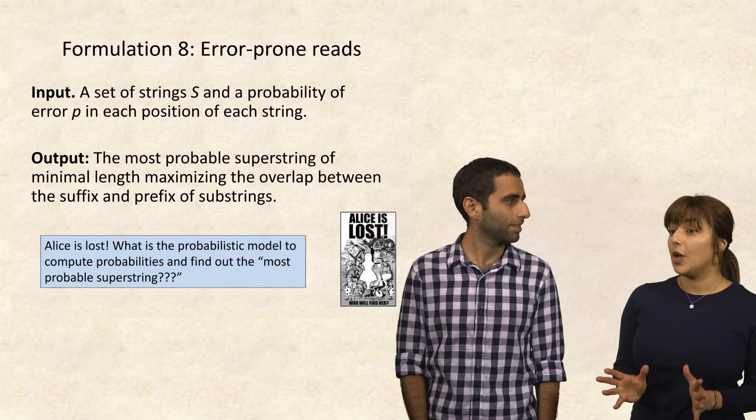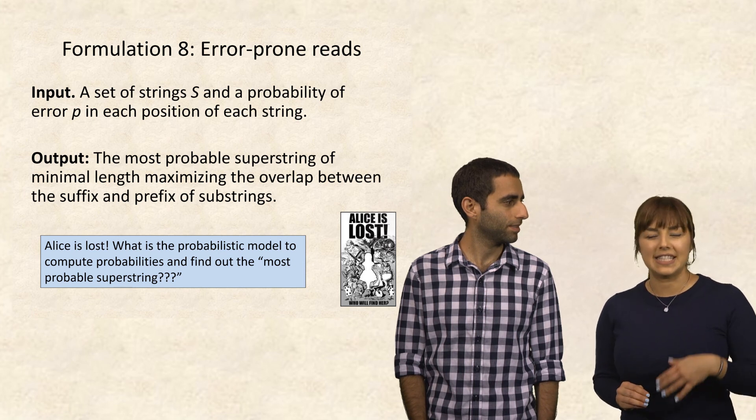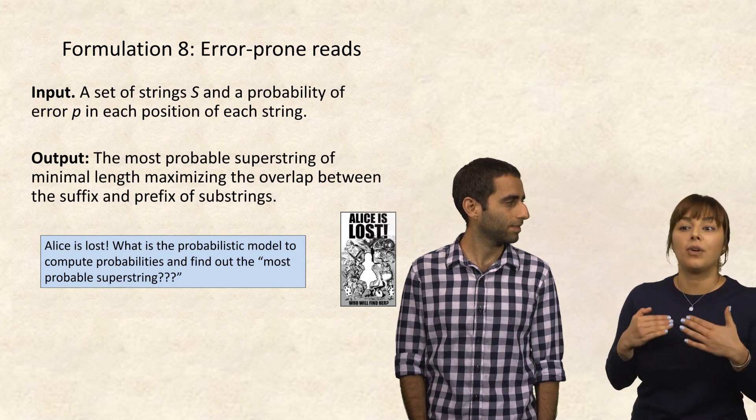Well, Alice is lost. What is the probabilistic model to compute the probabilities and find out what is the most probable superstring? So we're not going to get further into the problem of finding the problem formulation in case of error-prone reads. But to learn about that, be sure to continue with the course.